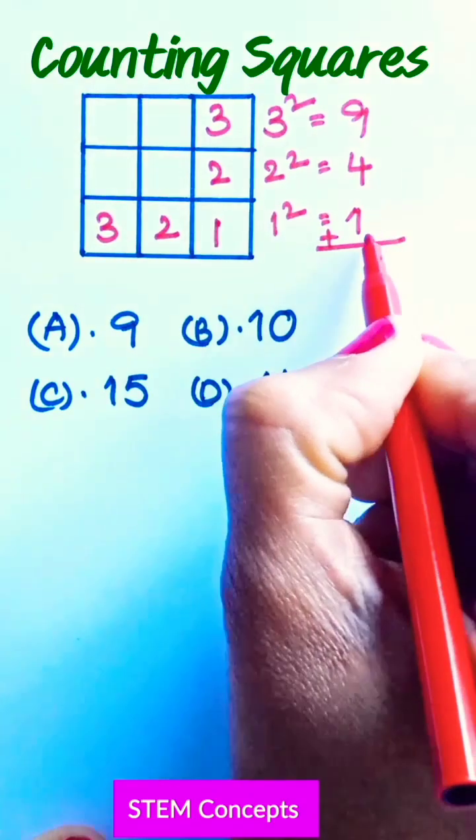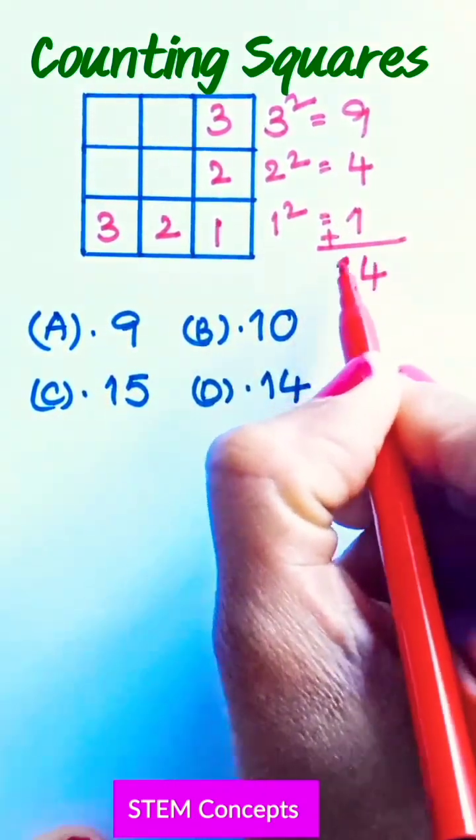Now let us just add all these numbers. 9 plus 4 plus 1 is 14.